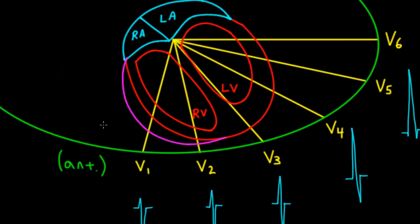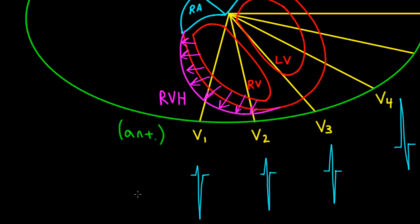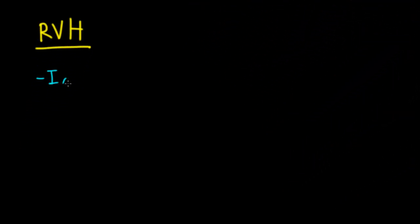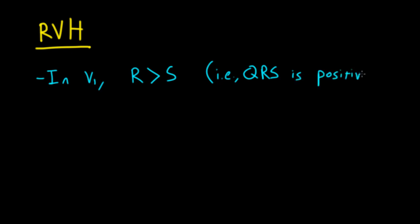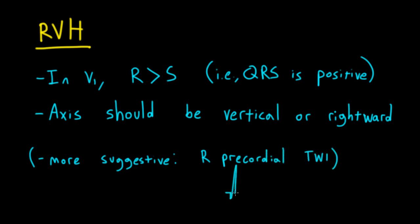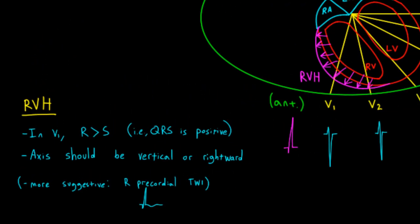With right ventricular hypertrophy, the forces of ventricular depolarization become more prominent in the vicinity of the right ventricle. As a consequence, in lead V1, the QRS complex will look more positive. One easy diagnostic criterion for RVH is to look in lead V1 and see if the height of the R wave is taller than the depth of the S wave — in other words, if the QRS complex looks positive. You should also have a QRS axis that's either vertical or rightward. Even more suggestive of RVH is T wave inversions in the right precordial leads, such as V1 and V2. Important causes of RVH include congenital heart disease, mitral stenosis, and pulmonary hypertension, for example due to severe lung disease.